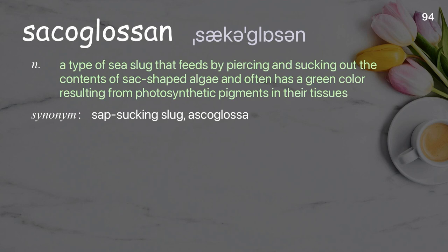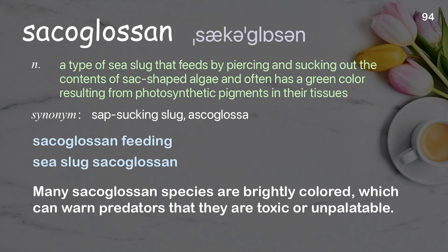Sacoglossan. A type of sea slug that feeds by piercing and sucking out the contents of sack-shaped algae, and often has a green color resulting from photosynthetic pigments in their tissues. Many sacoglossan species are brightly colored, which can warn predators that they are toxic or unpalatable.